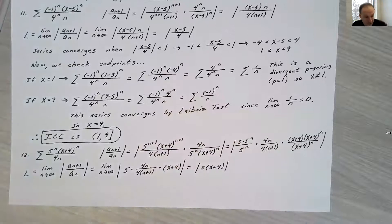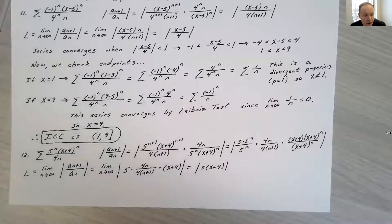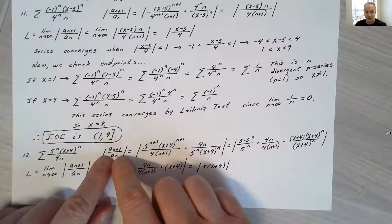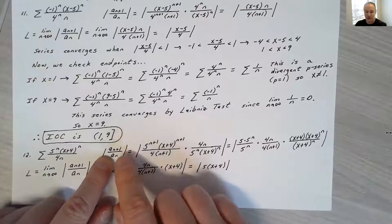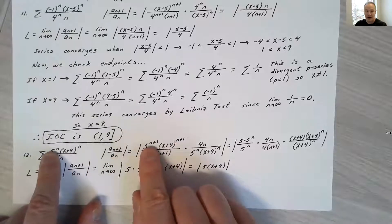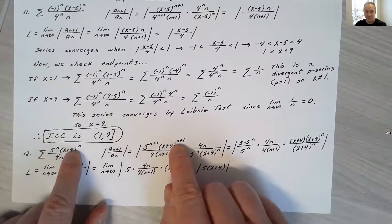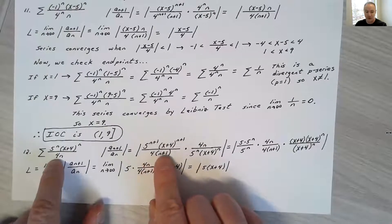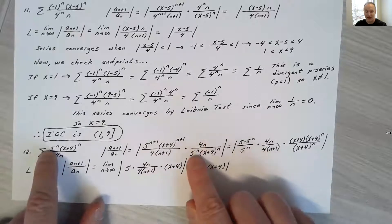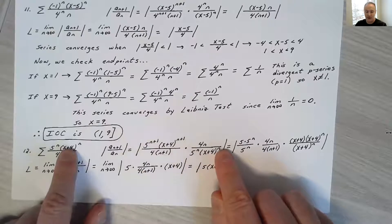Problem 12: find when the power series of 5^n times (x plus 4)^n over (4n) converges. Using the ratio test, I find A_(n+1) over A_n. Plugging in gives 5^(n+1) times (x plus 4)^(n+1) over (4 times (n+1)) divided by the nth term, multiplied by the reciprocal of A_n, which places 4n in the numerator and 5^n times (x plus 4)^n in the denominator.